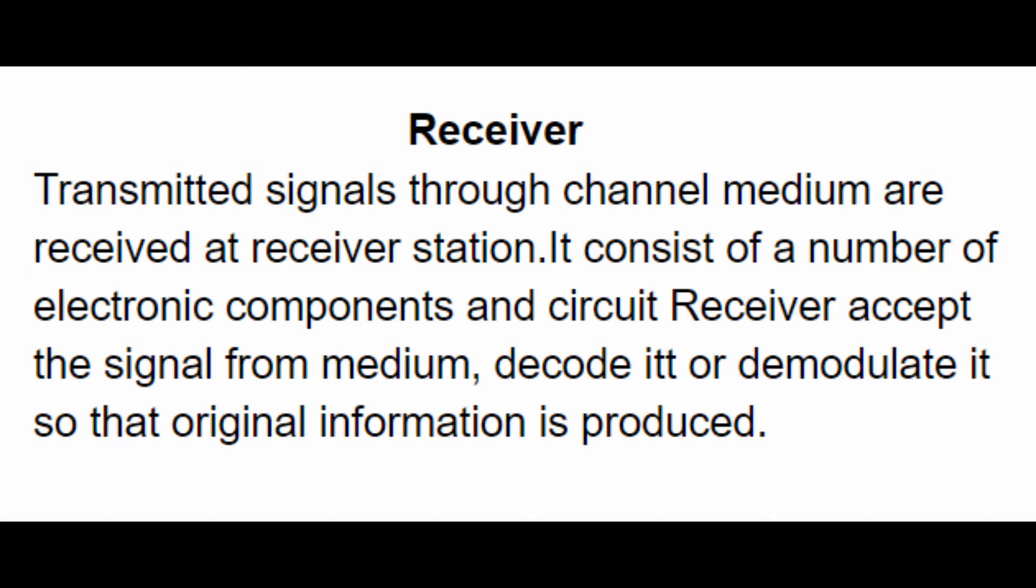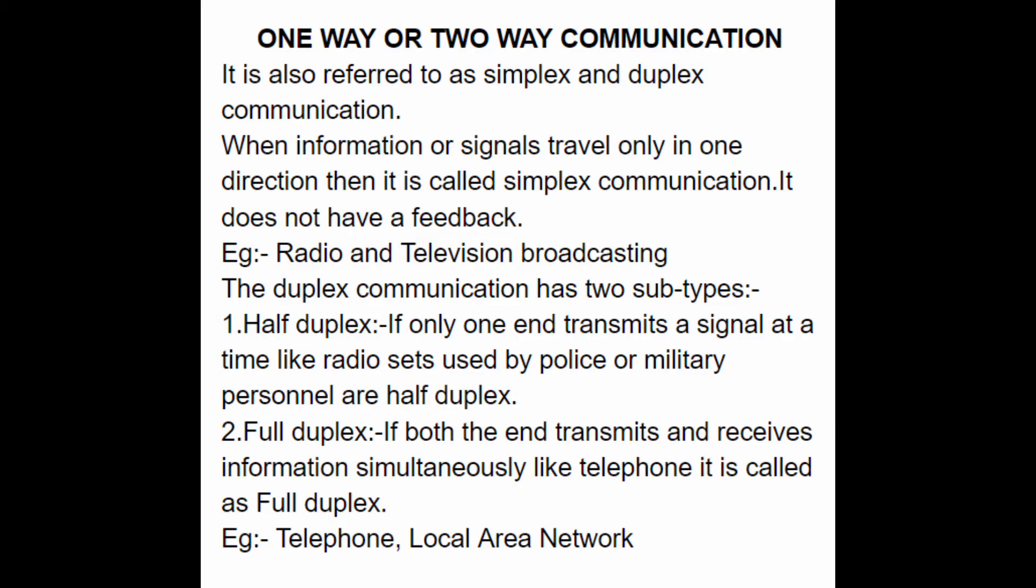Now we are going to see what is one-way and two-way communication. It is also referred to as simplex and duplex communication. When information or signals travel only in one direction, then it is called simplex communication. It does not have any feedback, for example radio and television broadcasting. Duplex communication has two subtypes: half duplex and full duplex. If only one end transmits a signal at a time, like radio sets also known as walkie-talkies used by police or military personnel, it is half duplex. Full duplex is when both ends transmit and receive information simultaneously, like telephone, which is called full duplex. For example, telephone and local area network.